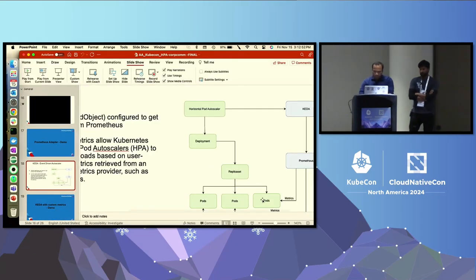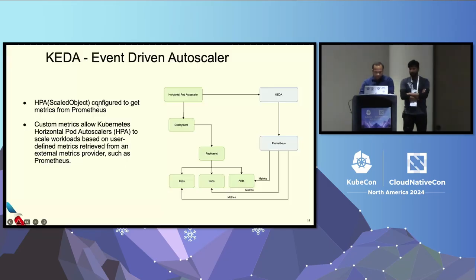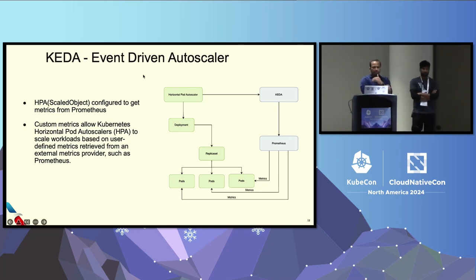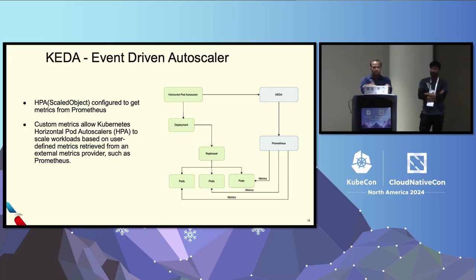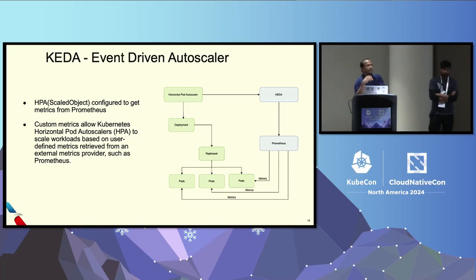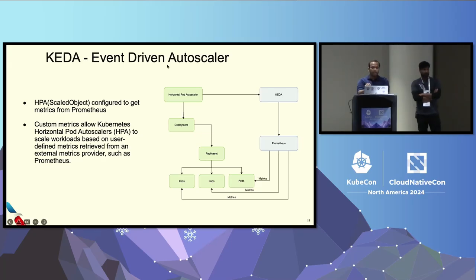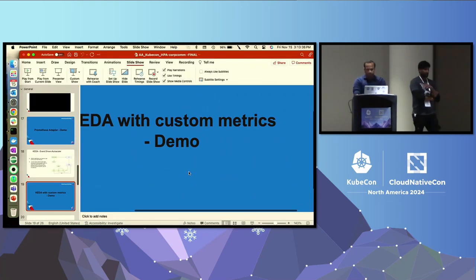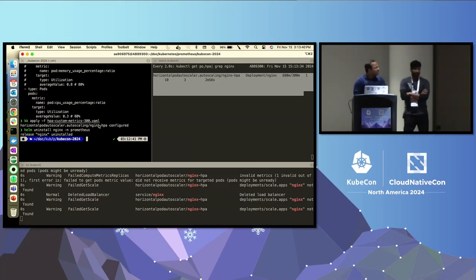Now let's see how we can use KEDA. In the previous demo, Prometheus Adapter was presenting metrics to HPA. KEDA — Kubernetes Event-Driven Autoscaling — is another operator that can be installed on the cluster. KEDA has custom CRs called ScaledObject that internally create HPA. KEDA has a built-in metrics adapter that consumes metrics from Prometheus and presents them to HPA. How many of you have heard about or worked with KEDA?